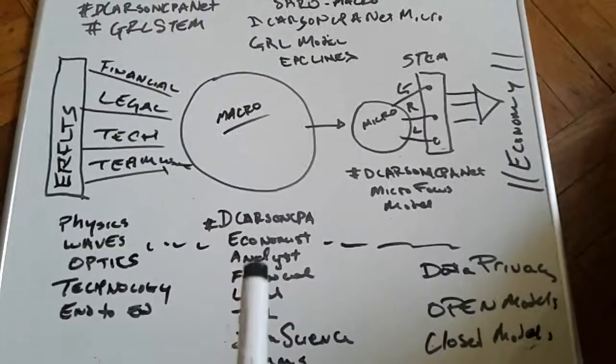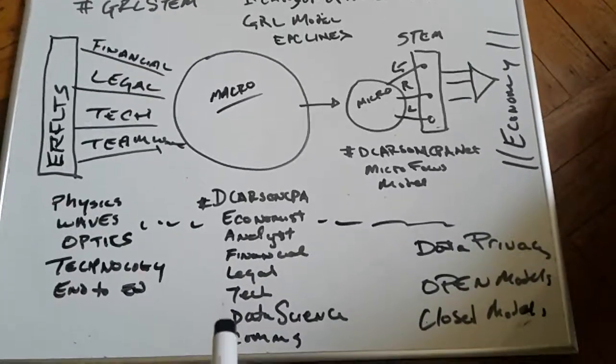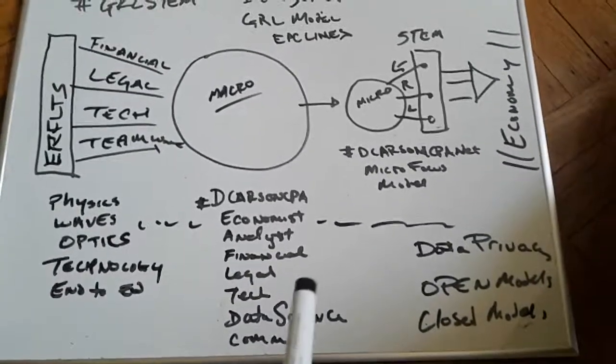On the macro lines, it's economic research, analyst research, financial, legal, tech, data science, comms, actuarial apprentice, and agility to think across many lines.